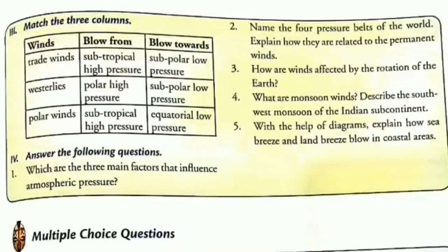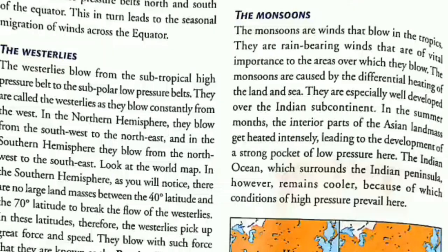Question 4: what are monsoon winds? Describe the southwest monsoon of the Indian subcontinent. Come to page 48. For the first part: the monsoons are winds that blow in the tropics. They are rain-bearing winds that are of vital importance to the areas over which they blow. For the second part, I am dictating the answer — it is mostly the same as in your books, just with simpler language.